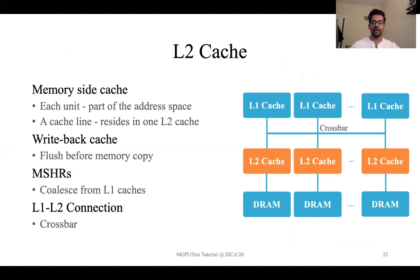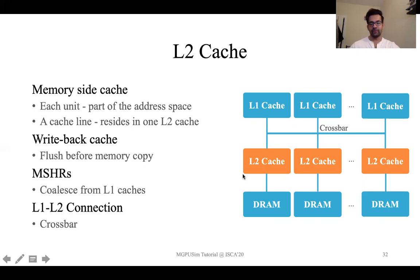The L2 cache is a memory-side cache. One important thing to note is that the L2 cache is multi-banked, as shown in the figure. Each unit handles a part of the address space, and a cache line resides in one of these L2 cache banks. The reason for multi-banking the L2 cache is that it enables it to serve multiple requests from the different L1 caches, which is critical for GPUs because there can be multiple requests in flight given their high memory bandwidth demands.